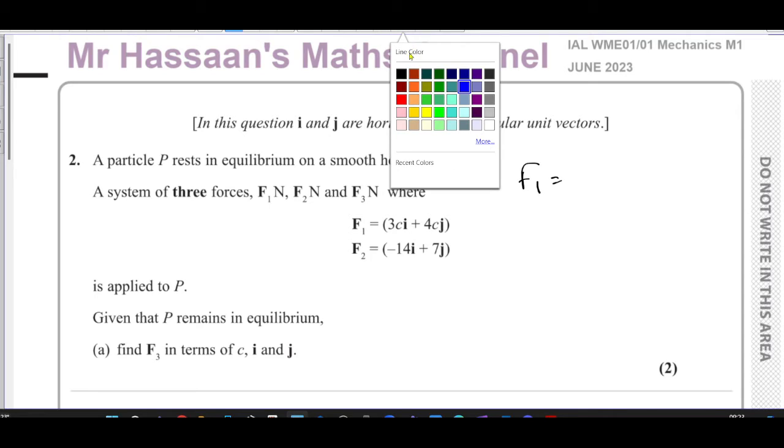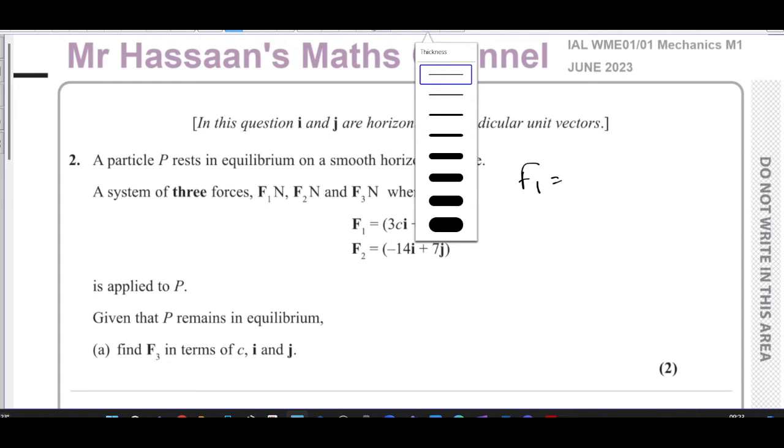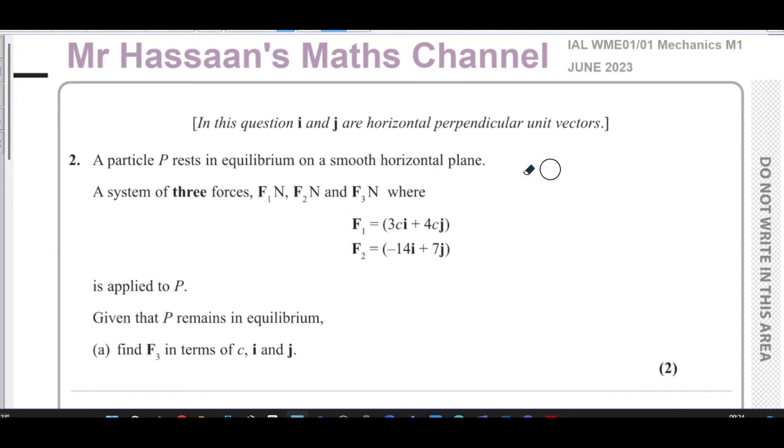I'm going to write these as column vectors. So F1 is basically 3ci, so I'll write that on the top, and 4cj. And F2 is minus 14i, so minus 14 on top, and 7 underneath. I just like to write them like that.